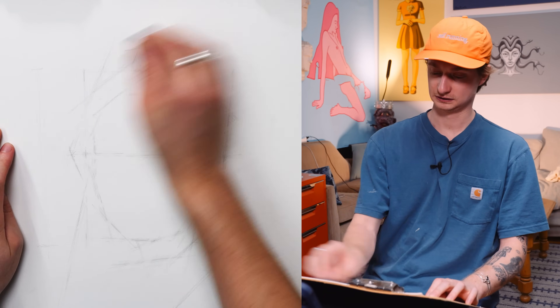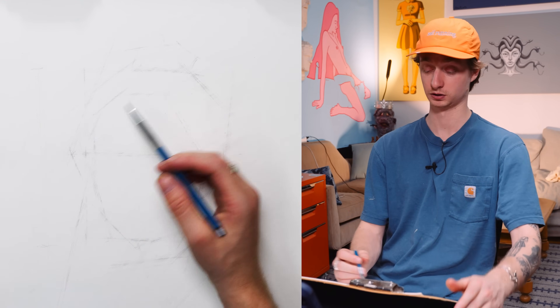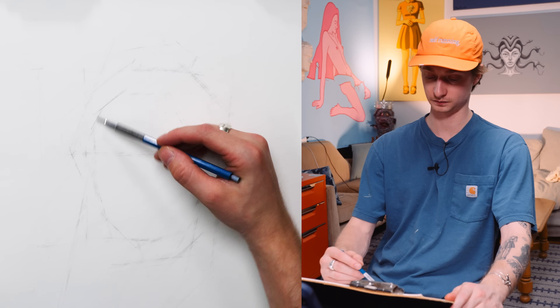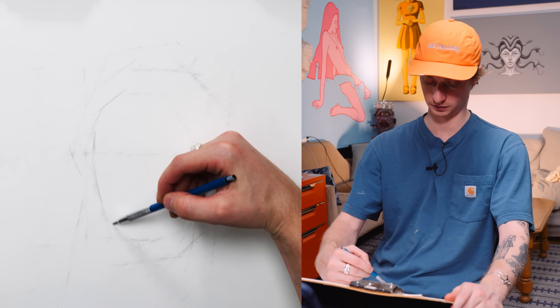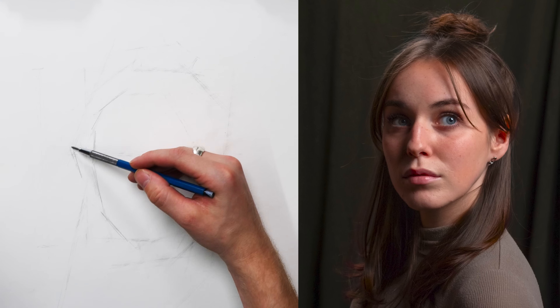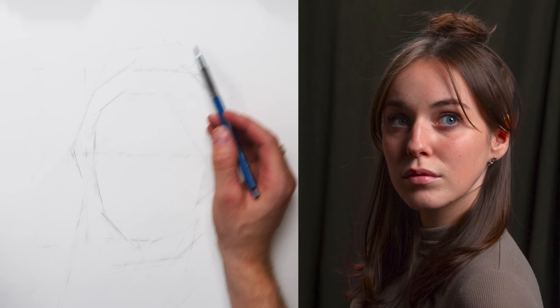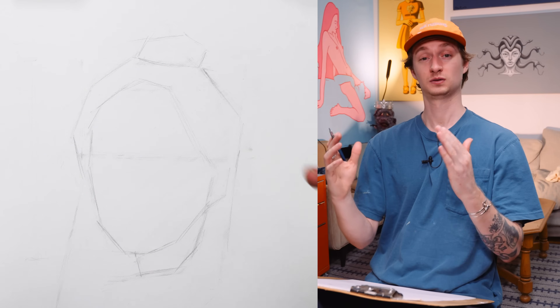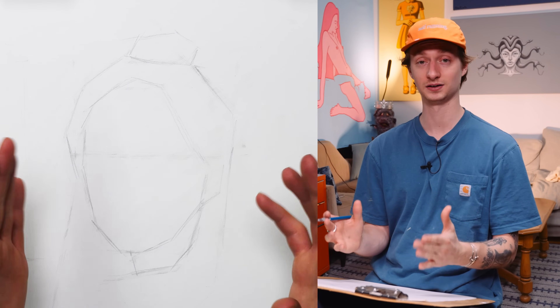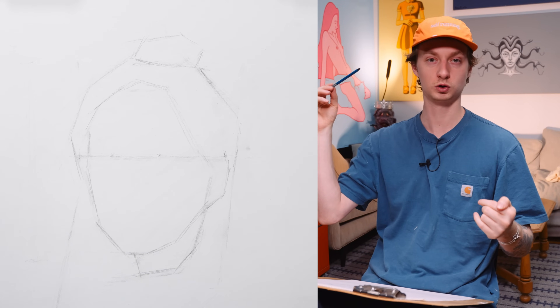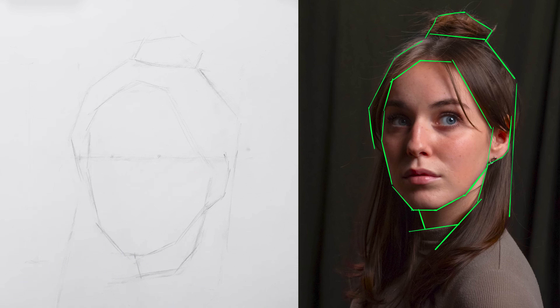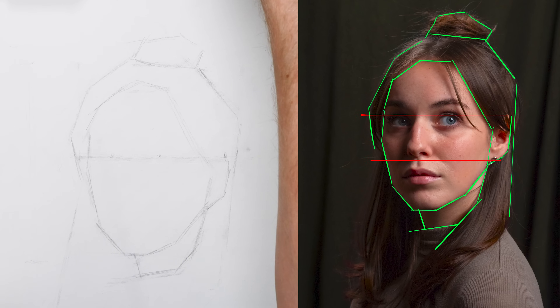I'm going to erase some of these lines to clean it up a little. Now that we have what we'd call our envelope — by no means accurate still — we can assume a lot of these angles and solidify them just a bit to make it easier to understand. We're comparing lines, comparing the width, the ratio of height versus width of the head. Now we're going to use plumb lines — drawing straight horizontal or vertical lines on the face to see where everything lines up.